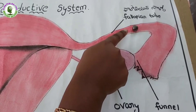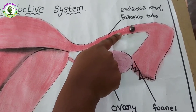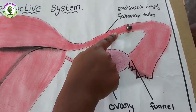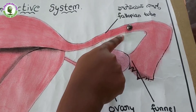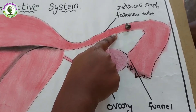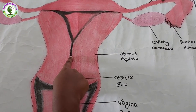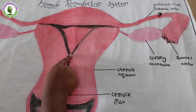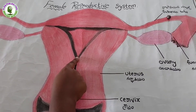After the fusion of both nuclei of sperm and ovum — that means after fertilization — the ovum transforms into a zygote. The thickness of the endometrium of the uterus gradually increases soon after menstruation.